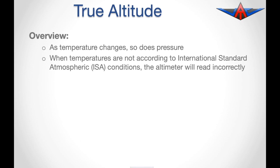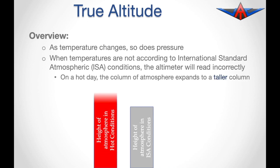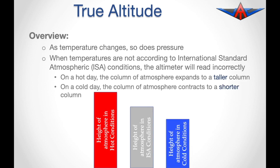Let's consider a column of air in International Standard Atmospheric Conditions. On a hot day, due to the expansion of the column, the column of atmosphere will be taller. Similarly, on a cold day, the atmospheric column will be shorter due to compression.